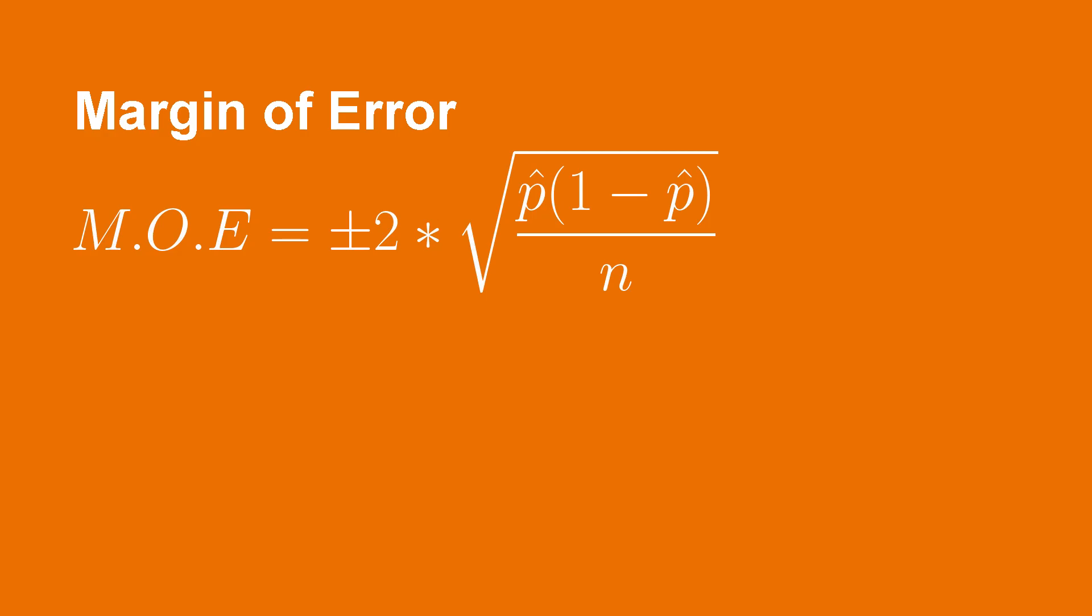In general, the margin of error for a 95% confidence interval is equal to plus or minus 2 times the standard error for a single population sample proportion. In the special case of the sample mean being close to 0.5, this approximates to just plus or minus 1 over the square root of the sample size.